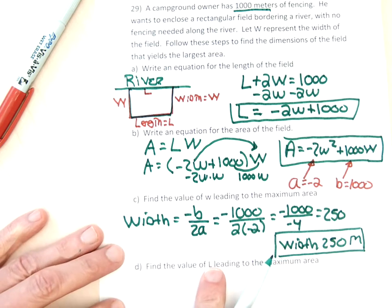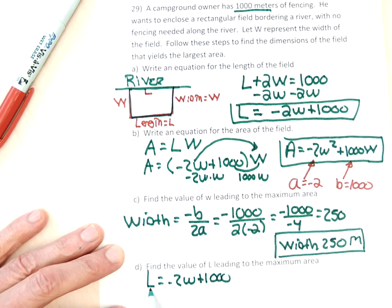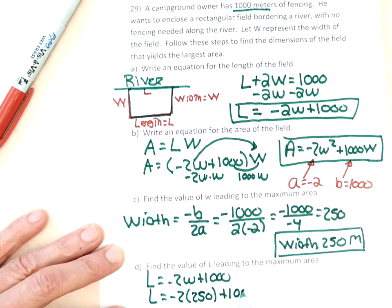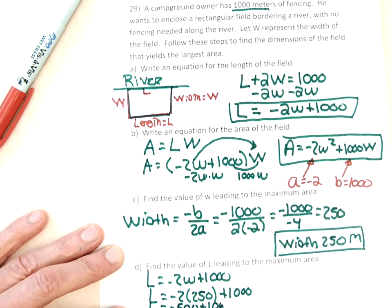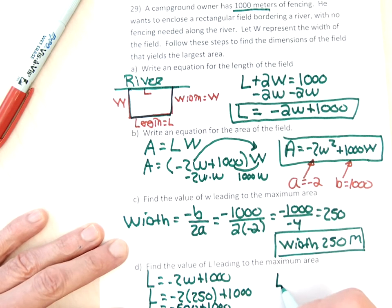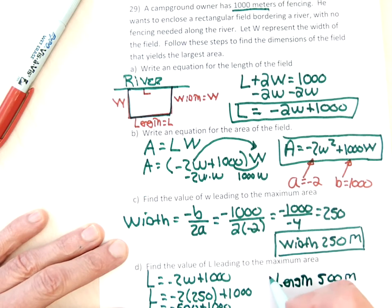Part D wants me to find the length. Using the length formula L equals negative 2W plus 1000, I plug in 250 for W: L equals negative 500 plus 1000, which gives 500. So the length is 500 meters.